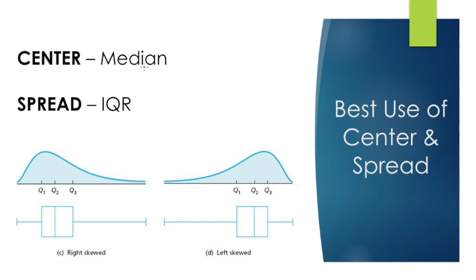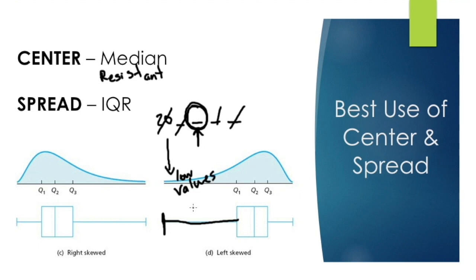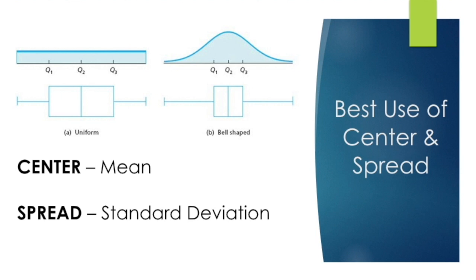When we have non-symmetrical distributions, the median is the measure we use for center and the IQR for spread. The median is said to be resistant — it resists the effect of high or low values. For example, with left-skewed data, no matter how low an outlying value is, the whisker just gets bigger on the left but the median remains stable. For right-skewed data with high values, the median is still the best choice for center and IQR for spread.